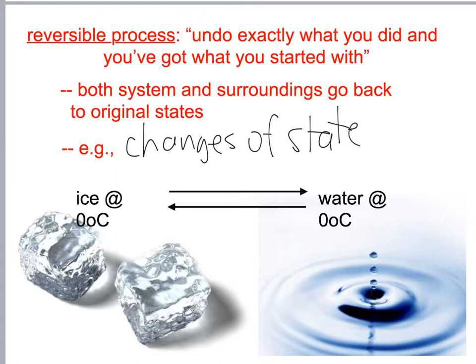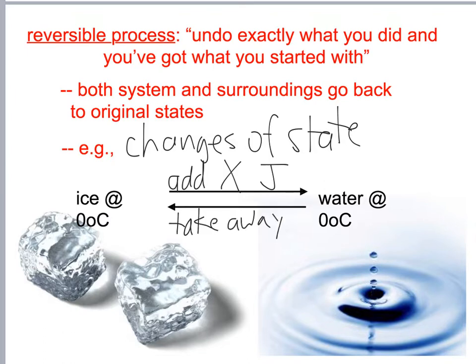For example, when I go from ice to water: I add a certain number of joules of energy to get water, then I take away X joules to go back to ice. It's still the same amount of water, the same amount of ice — exactly what you started with.